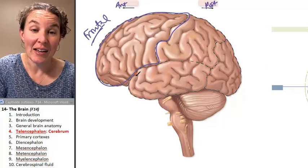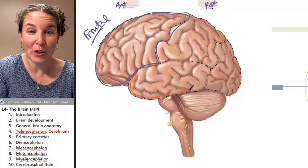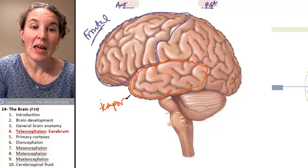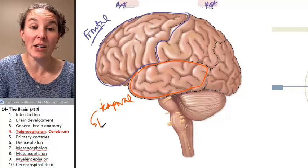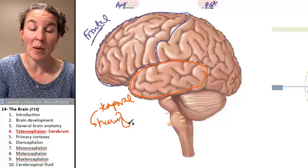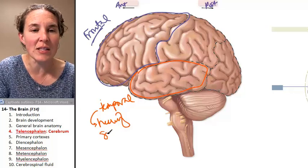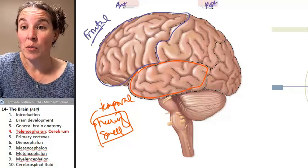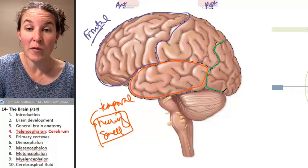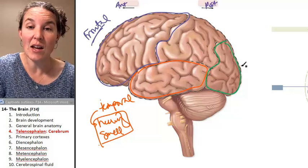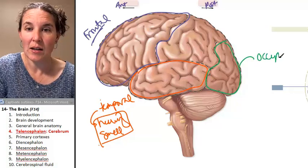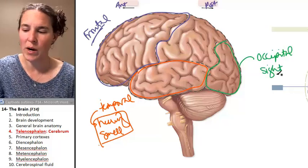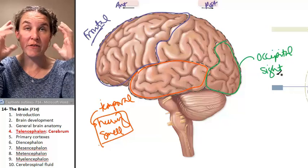If you look at the temporal lobe right here, the temporal lobe is involved in hearing. That one's easy to remember because it's close to your ear, but it's also involved in smell. The occipital lobe is this posterior lobe of your brain. The occipital lobe is vision, sight. This is where conscious vision is processed.